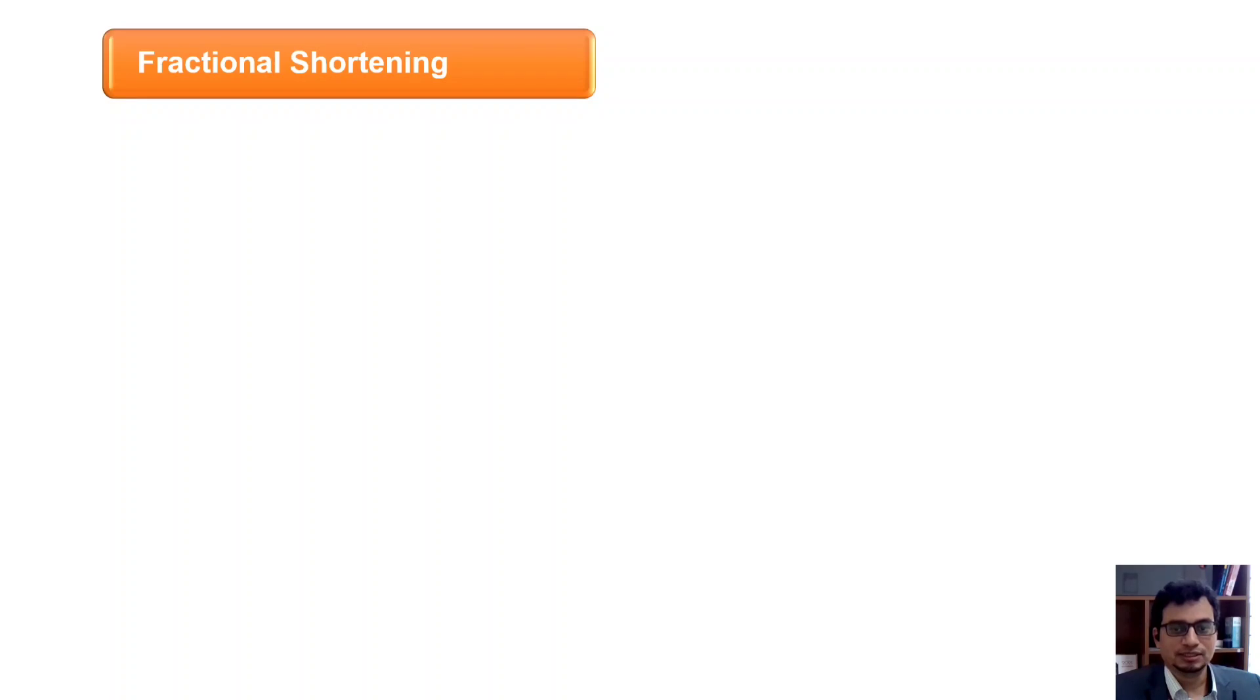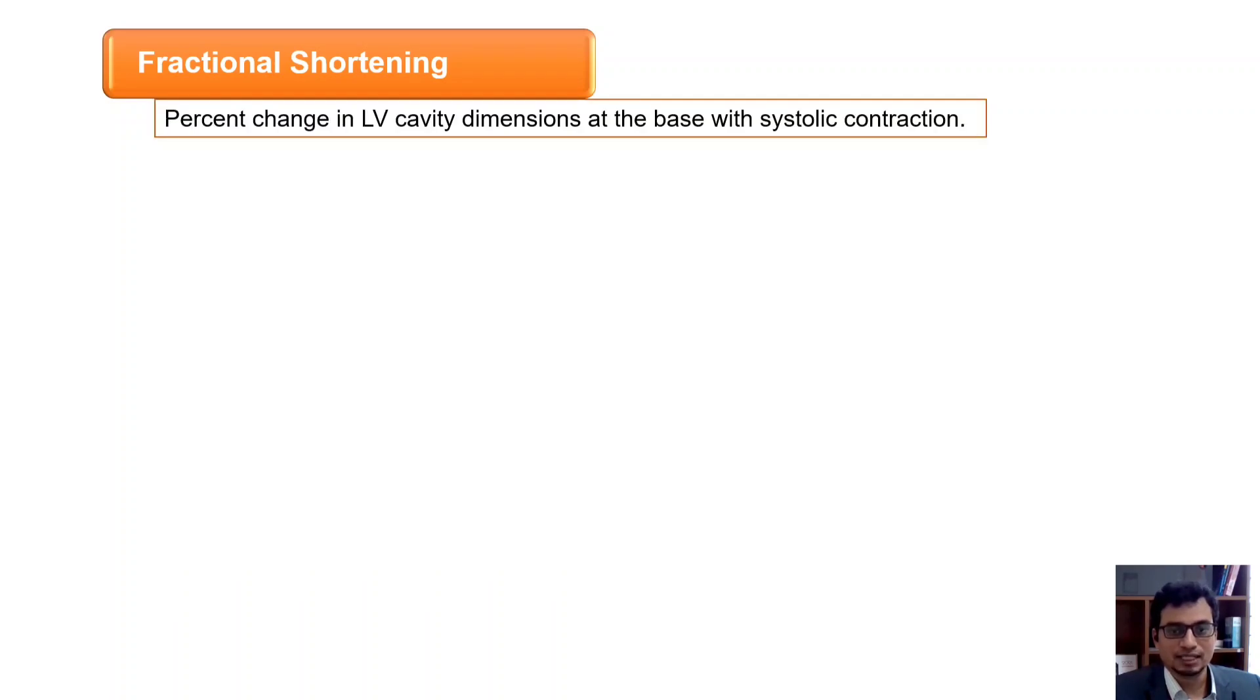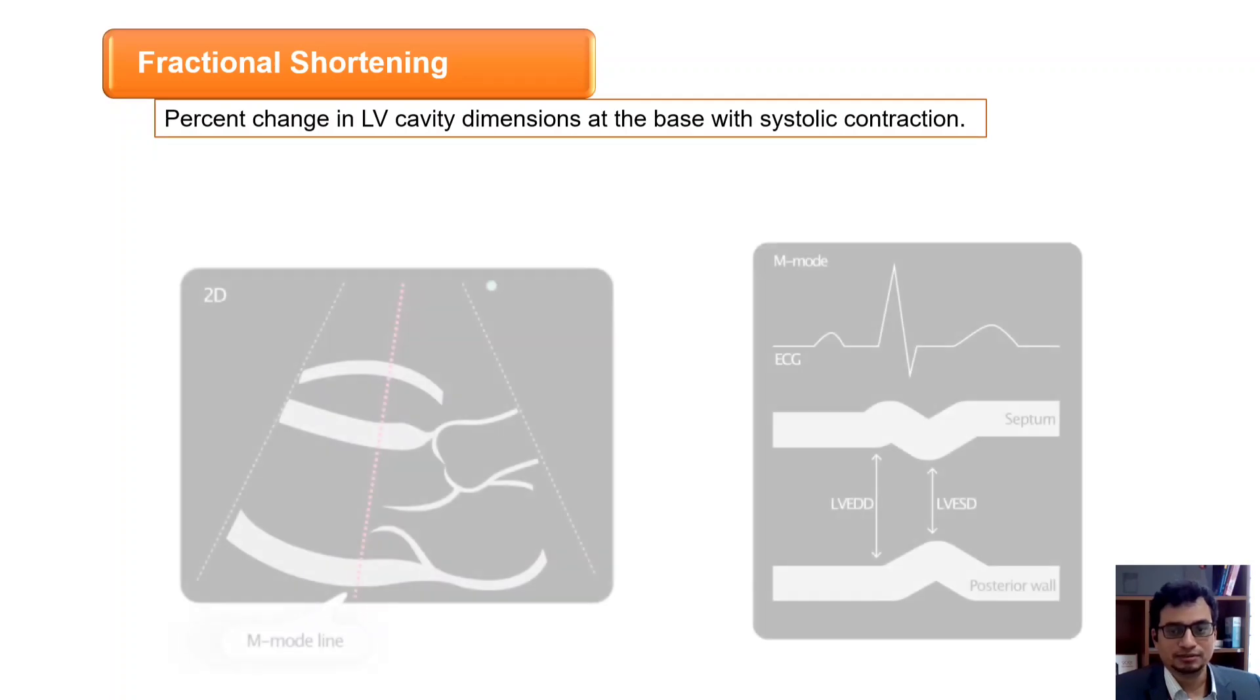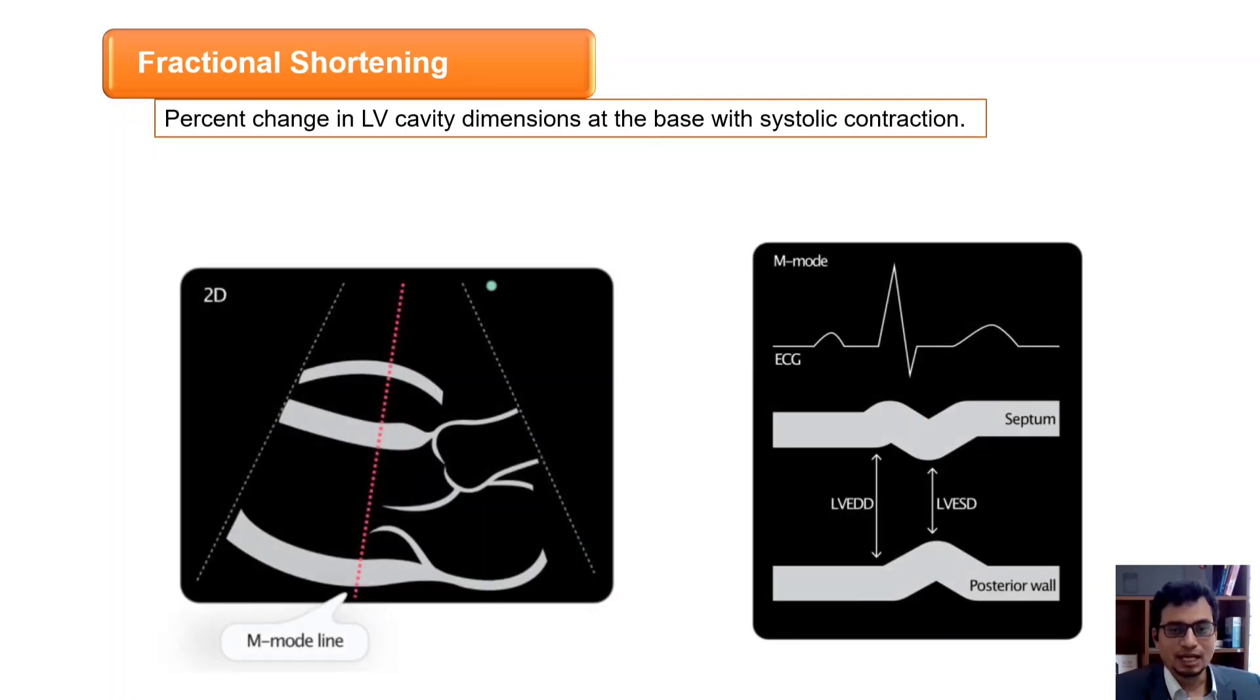Fractional shortening is calculated by measuring the percent change in LV cavity dimensions at the base with systolic contraction. Parasternal long axis view is obtained, then M mode is pressed and the M mode line is kept along the mid cavity of the left ventricle.